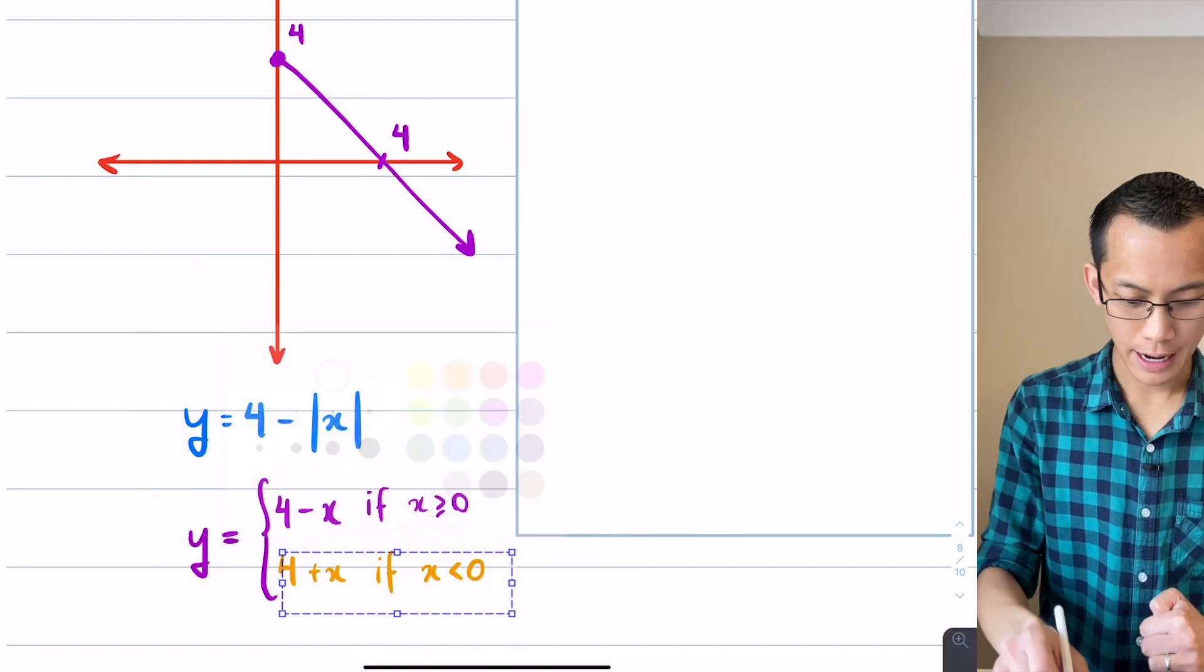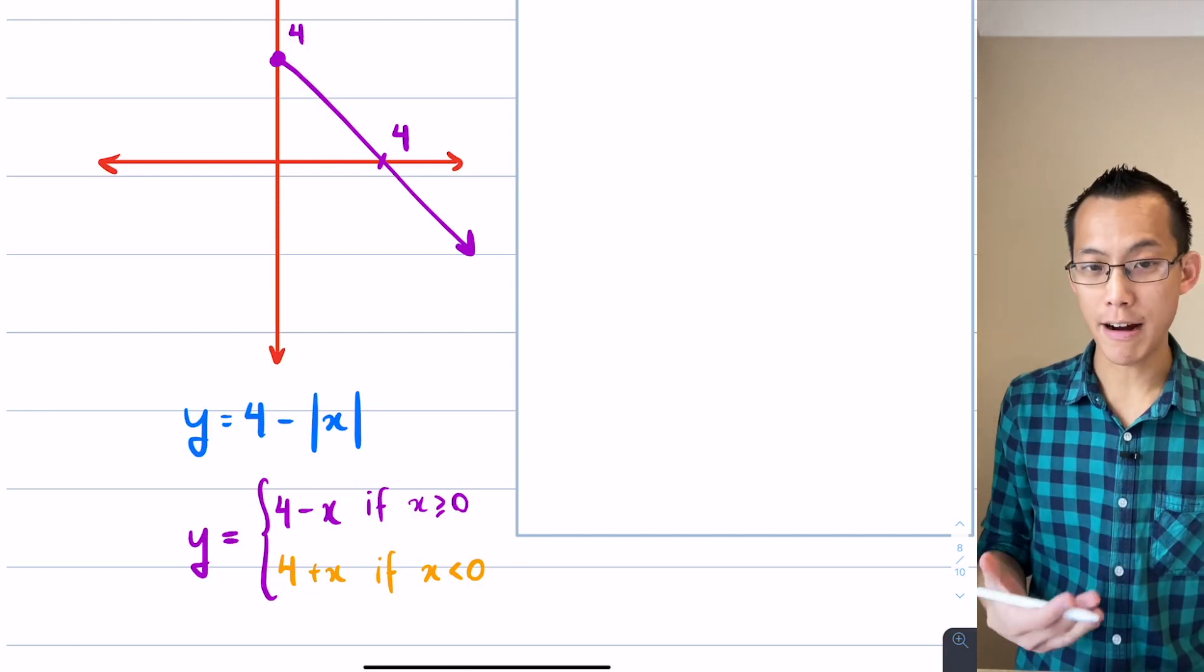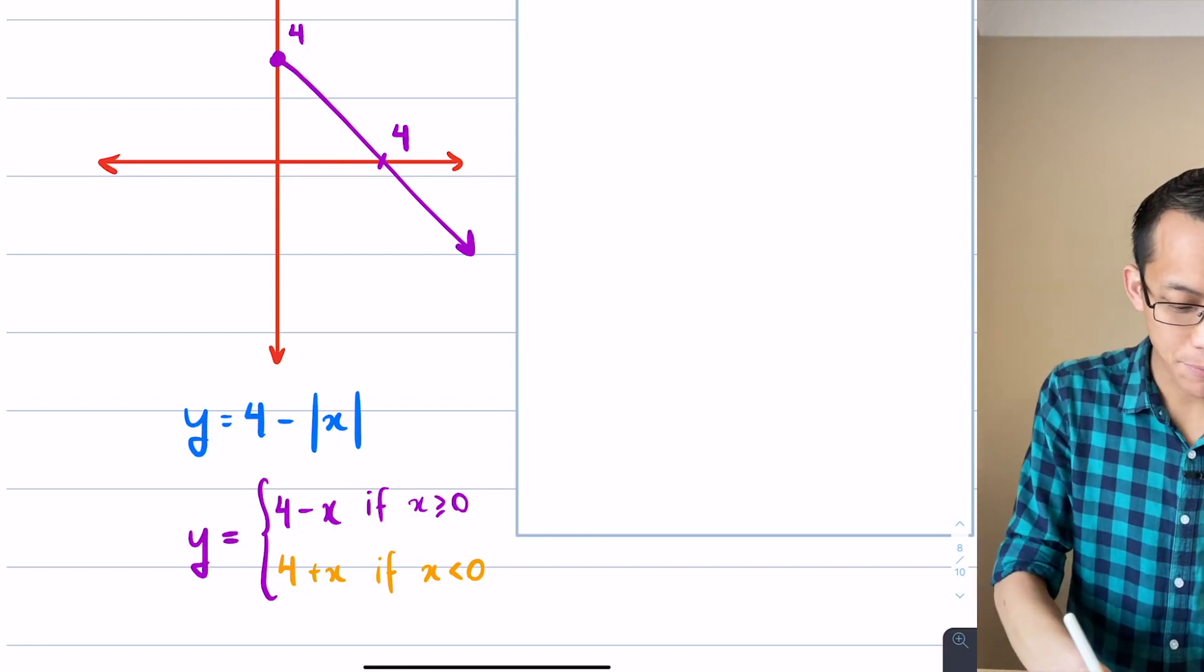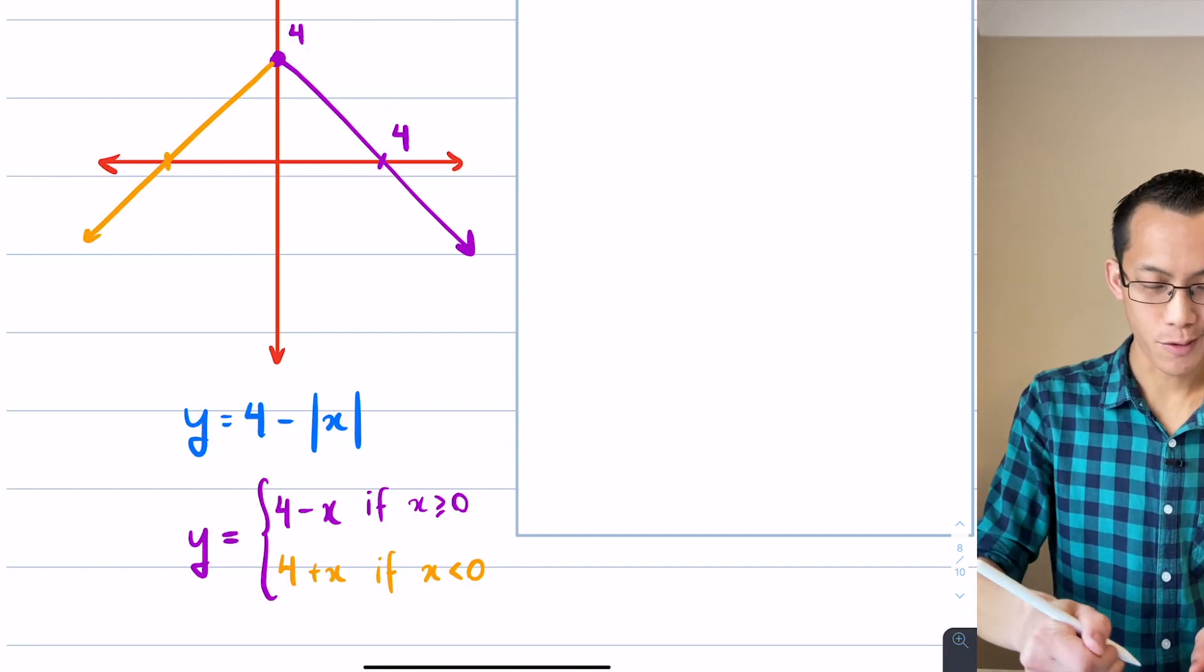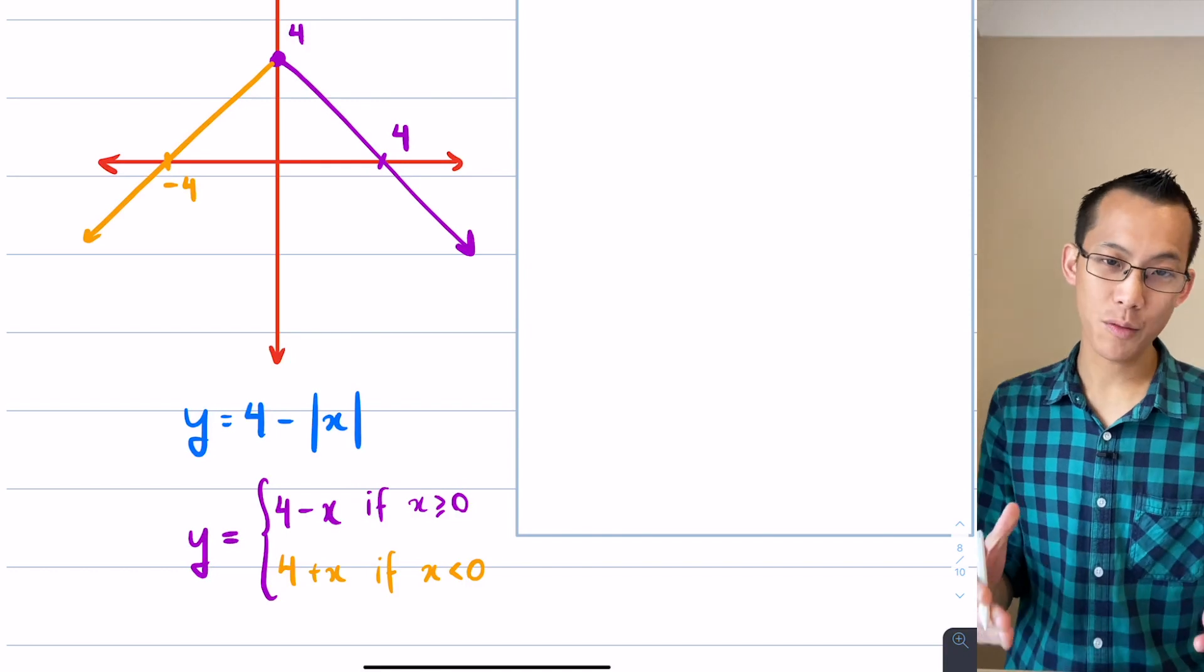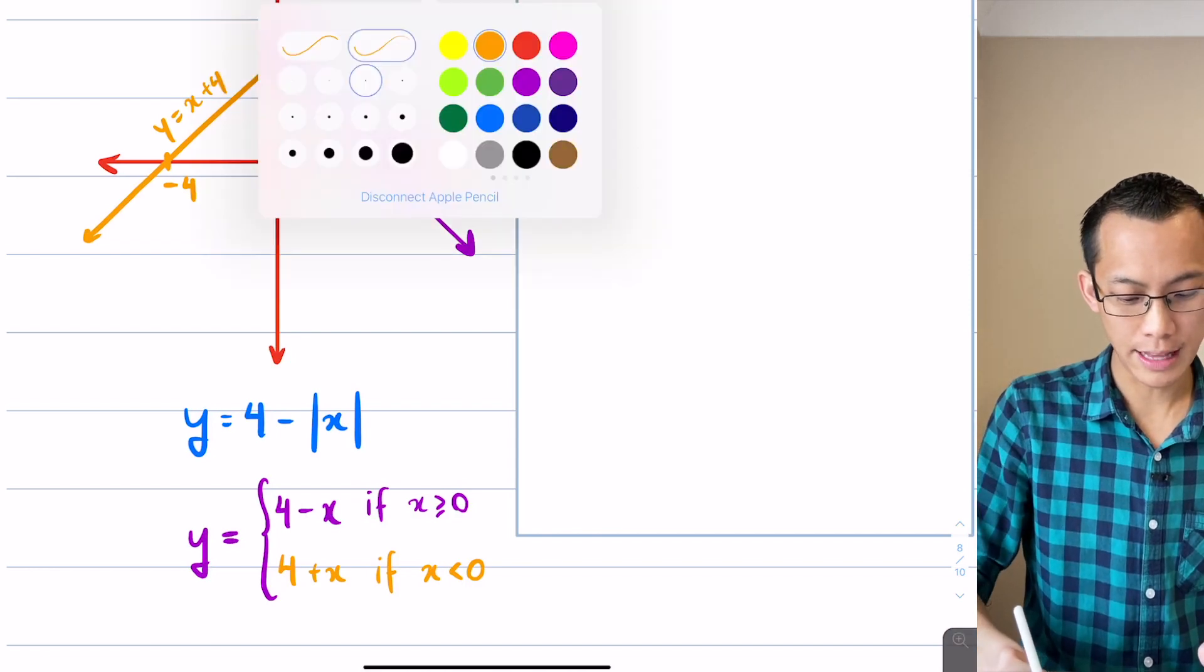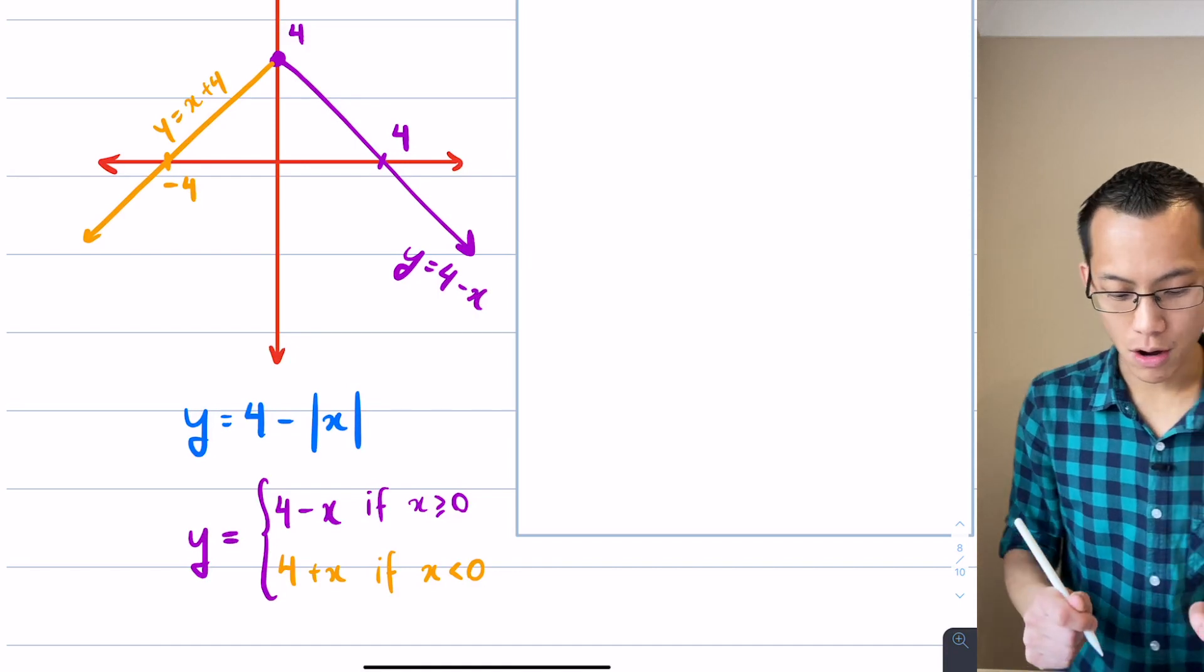When I have a look at the other branch, 4 plus x, I would normally write that as x plus 4. It's got a gradient of 1 but it has that same y-intercept, so it's going to collide at y equals 4 up the top there. So I've got an x-intercept over here on the left hand side of negative 4, and I can label these branches as x plus 4 on the left and 4 minus x on the right.